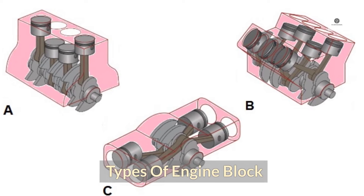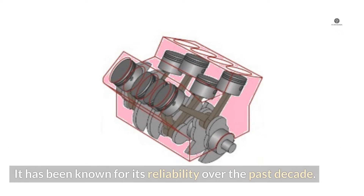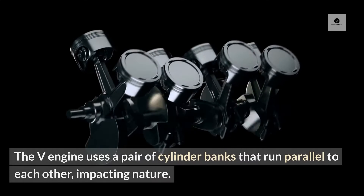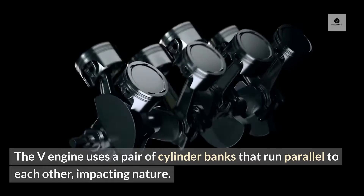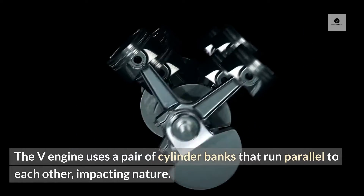Types of engine block. V-engine: The V-engine is a popular type of cylinder found in most vehicles today, from the Cadillac V16 to classic V8s and even small V4s used in motorcycles. It has been known for its reliability over the past decade. The V-engine uses a pair of cylinder banks that run parallel to each other.